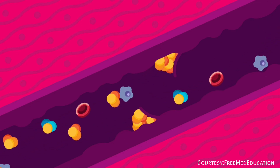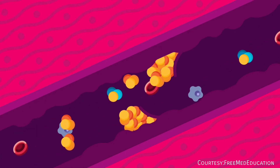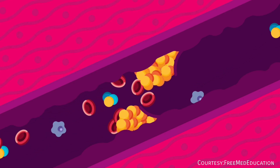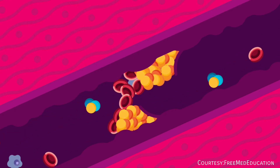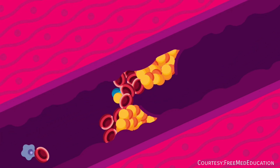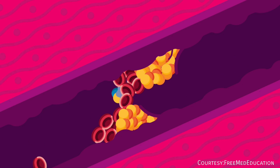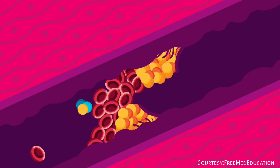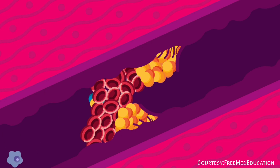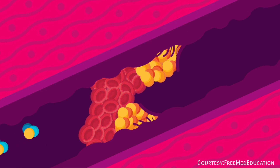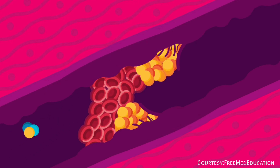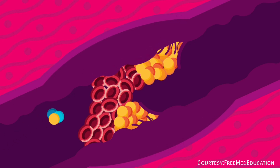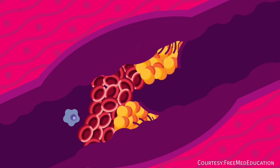Coronary heart disease normally happens when fatty deposits called cholesterol accumulate on the artery walls, creating plaques. The arteries are tightened, making it difficult for blood to flow to the heart. CHD may also be caused by blood clots or thrombus that totally occludes the blood flow. When these blockages occur, it is called coronary occlusion.